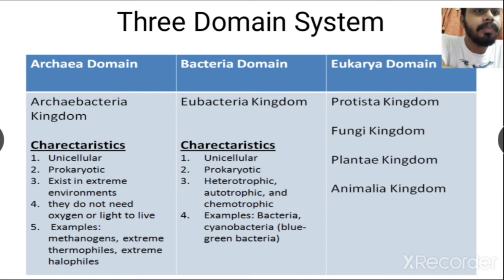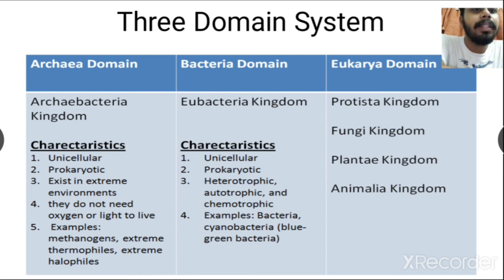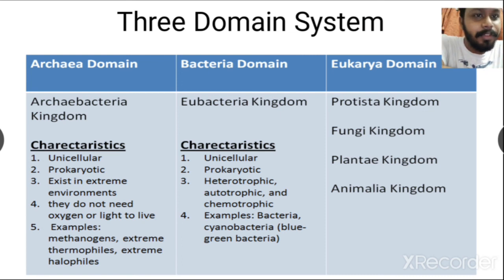In summary, the three domain classification system is based on 16S rRNA sequences. Different organisms, according to their differences in this sequence, are placed into three domains: Archaea domain, Bacteria domain, and Eukarya domain. Under these three domains, a total of six kingdoms are present. Thank you for watching this video.